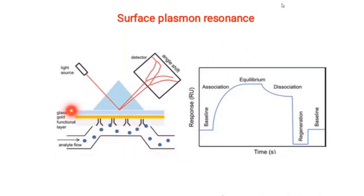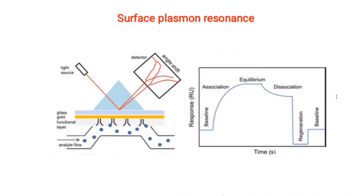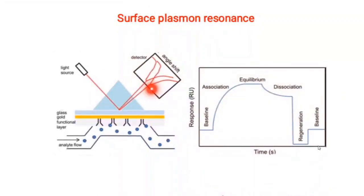In the other segment, you can see a light source — a red light is coming. Instead of getting reflected out, it is getting reflected back. In one case, you see that this incident light has an intensity minima. Why does this minima occur in SPR? This is the whole basic principle which is there — surface plasmon resonance.